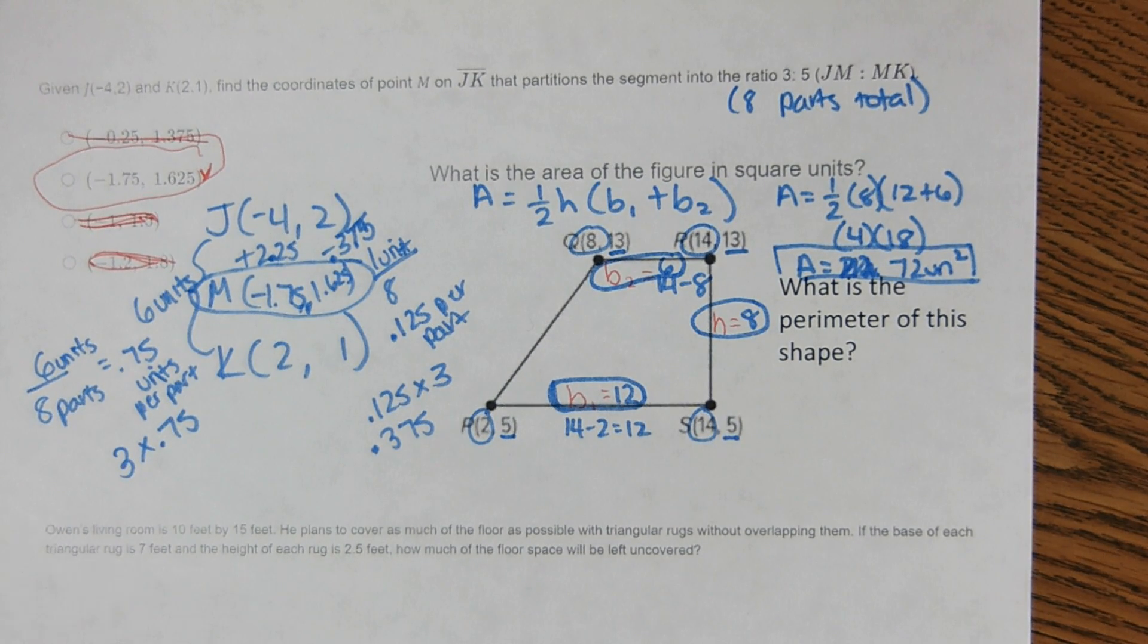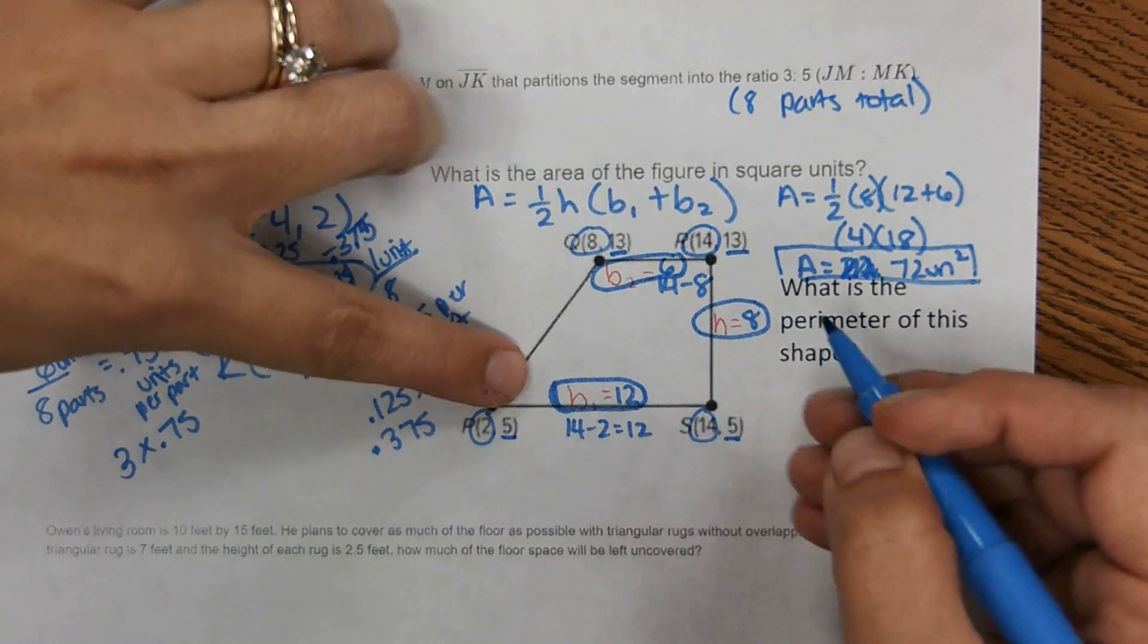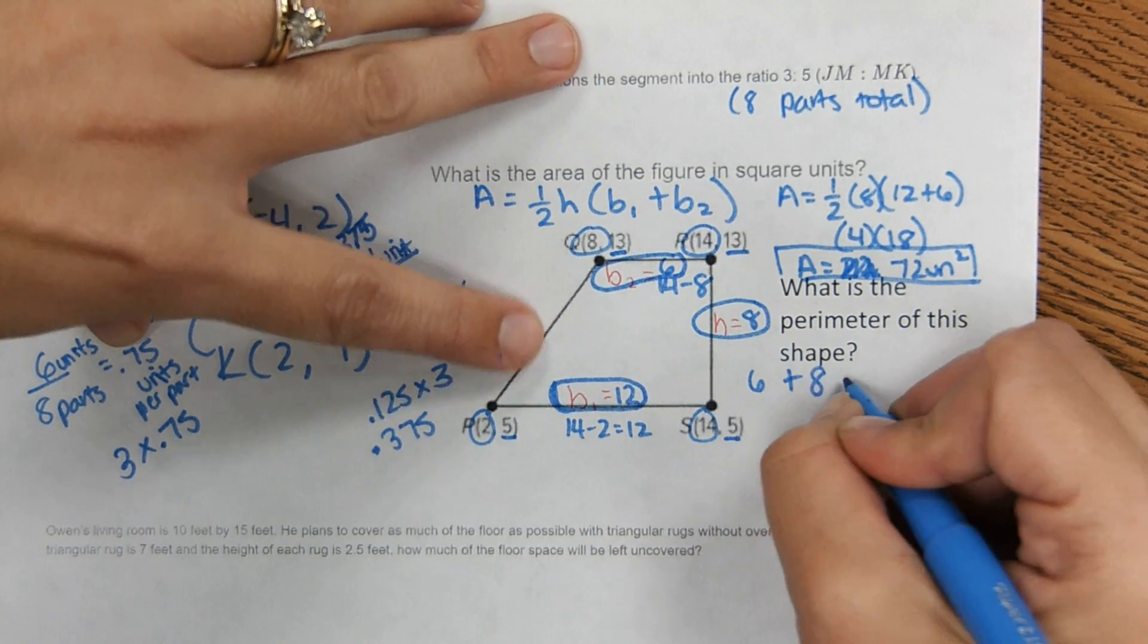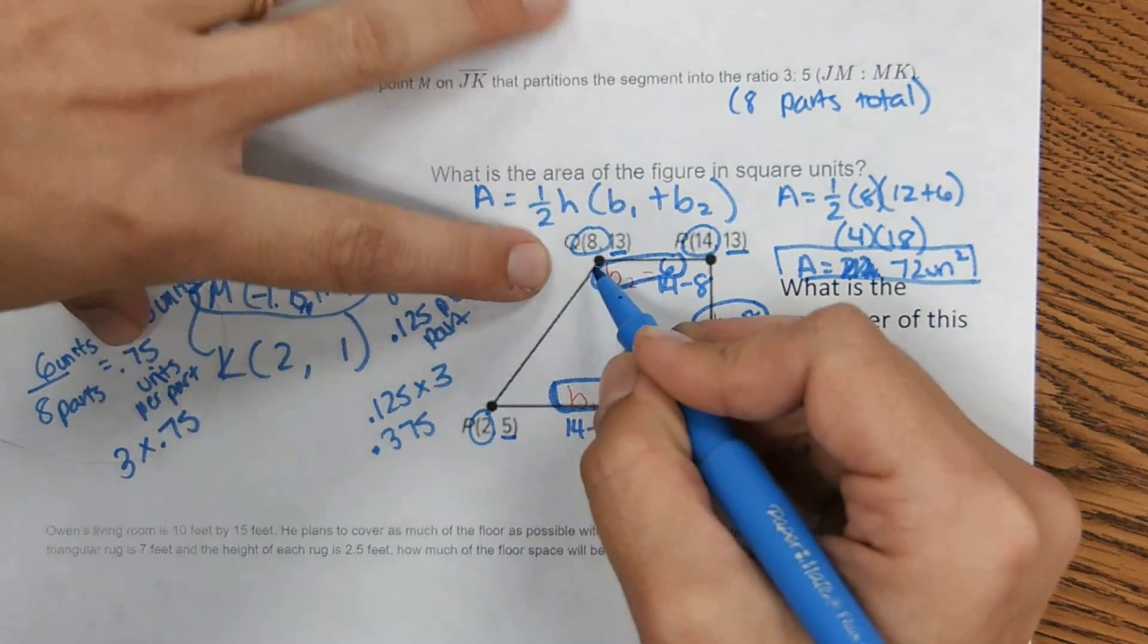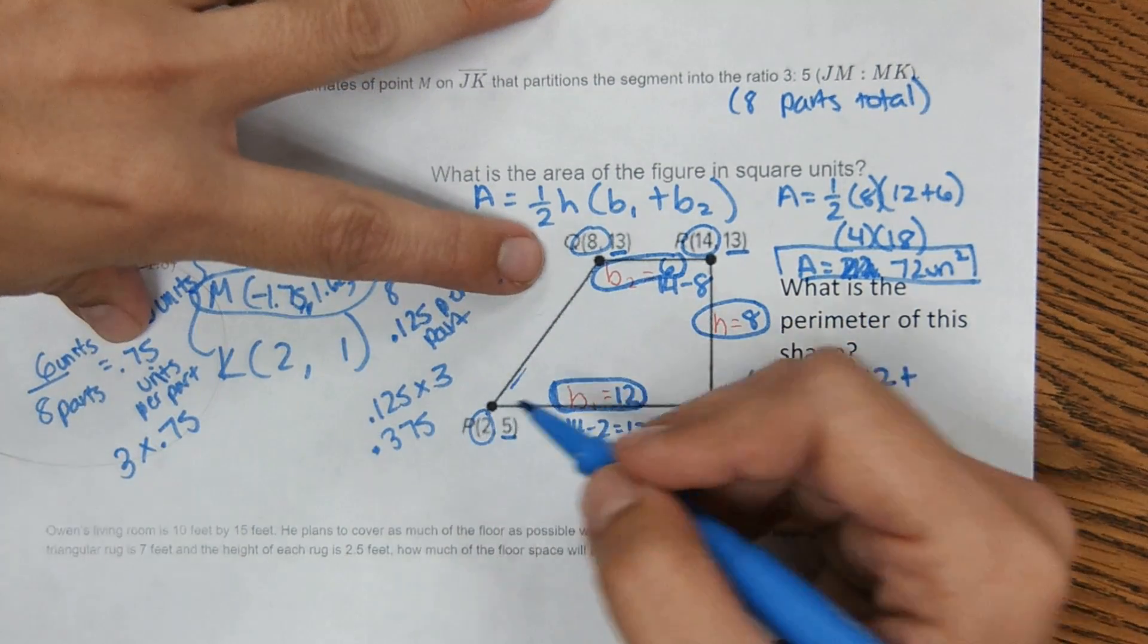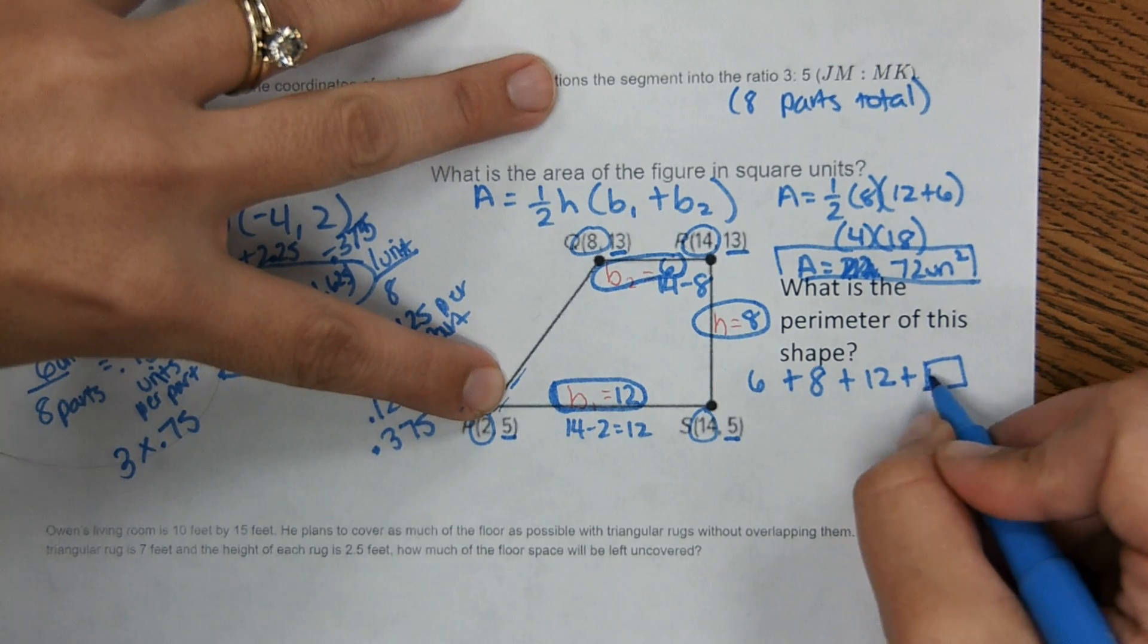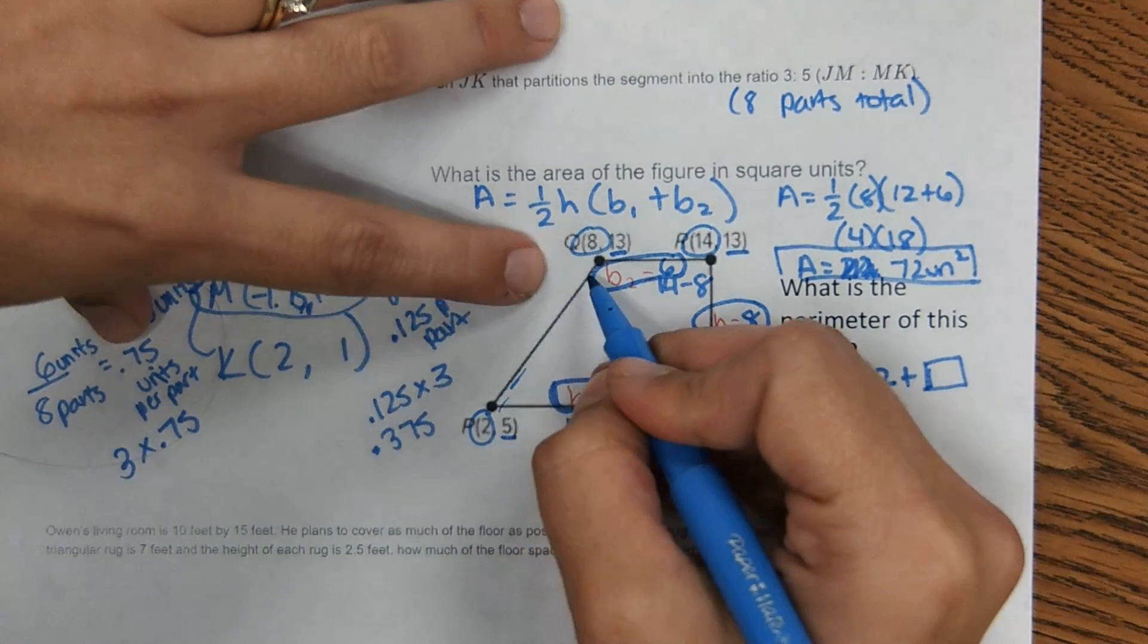Okay, for perimeter of the shape, we need to add up all the sides. So we have that one of the sides is 6. We have another side is 8. Another side is 12. This diagonal side right here, we have to solve for it because we don't know. We're going to use distance formula to solve for this.